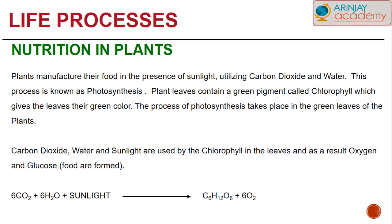Plants contain a green pigment called chlorophyll, which is responsible for trapping the sunlight's energy. Chlorophyll is a green pigmentation found in cells called chloroplasts. The chloroplasts are the ones actually responsible for producing the plant's food.